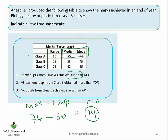Returning to statement one, we can now evaluate whether it's true or false. It says: some pupils from class A achieve less than 14%. You would say no, because according to this, someone could have got 14, but no lower. So my answer to statement one is false.